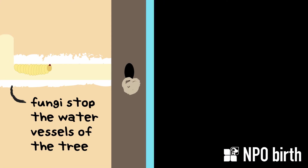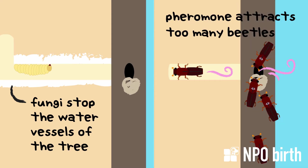The fungi that Oak Ambrosia Beetles carry make the oak tree unable to suck up water. In addition, Oak Ambrosia Beetles release pheromones, so if many beetles get attracted, a large amount of fungi will get into the tree. This is called a mass attack, and a tree that gets a mass attack dies really quickly.